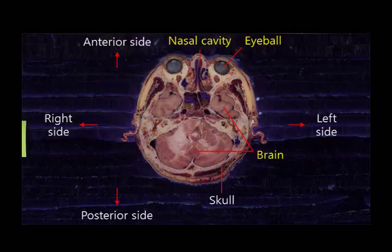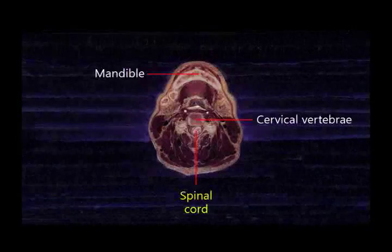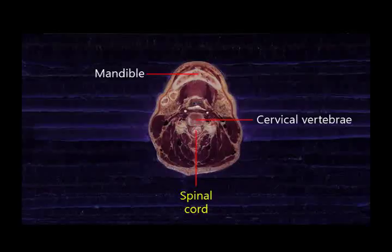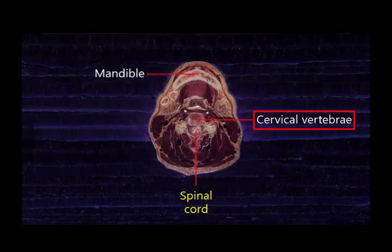On the muscular system chapter, we will show you not only the muscles, but also the bones where muscles are attached. This is the skull which contains the brain. This is the cervical vertebra which contains the spinal cord. On the front of it, there is the mandible. The mandible is the only bone which can be moved from the skull.